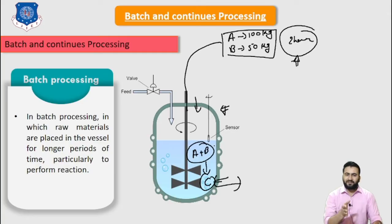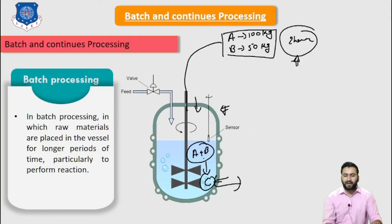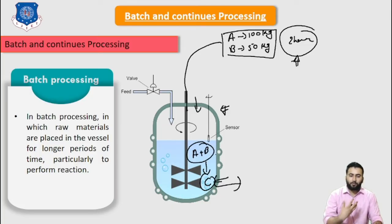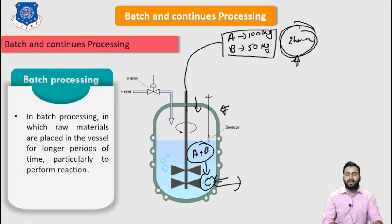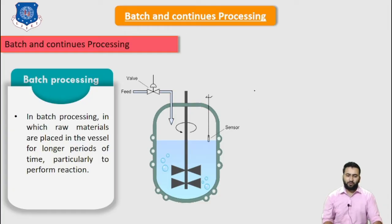Processing of successive batches must be waited until the completion of the current batch. If we are going to add some other chemicals or want to produce another product, then we need to wait for a certain period of time for the reaction. After that reaction and cleaning of this reactor, we can add another batch. For that, we are going to use a bar chart for scheduling this type of process.